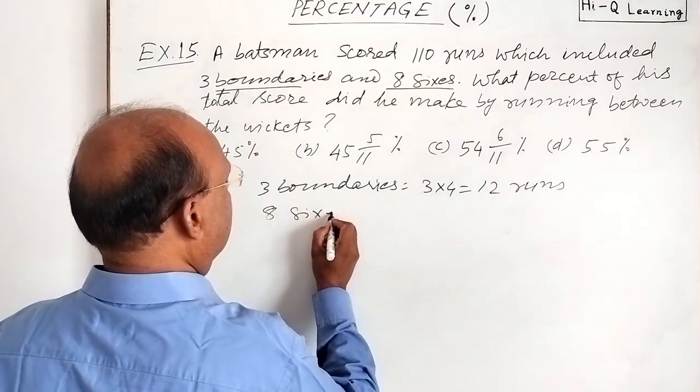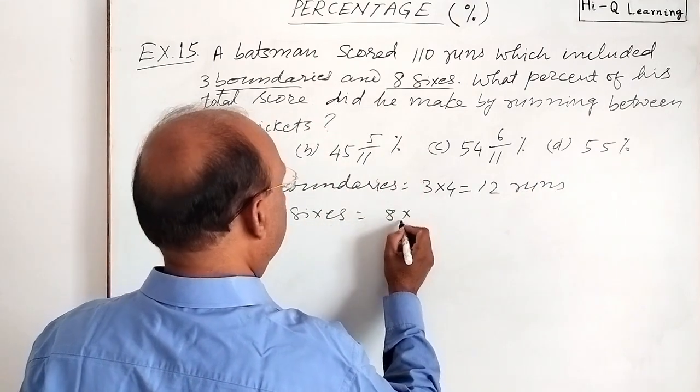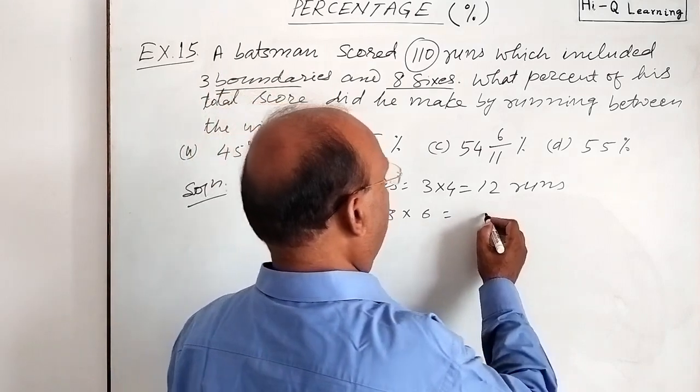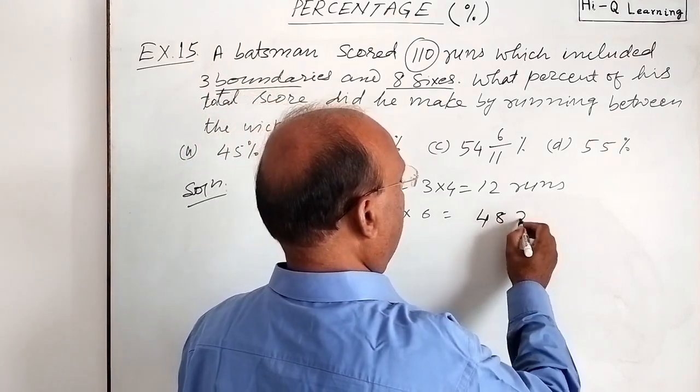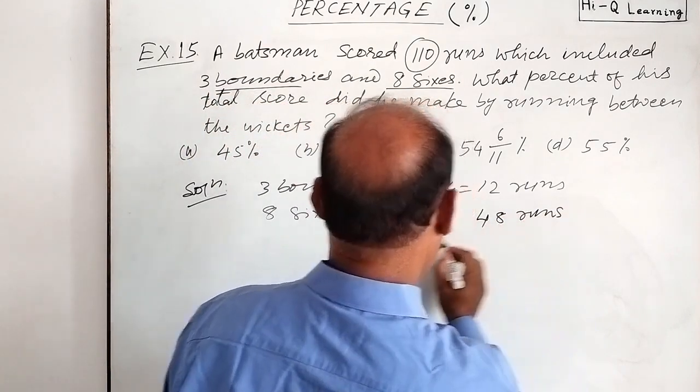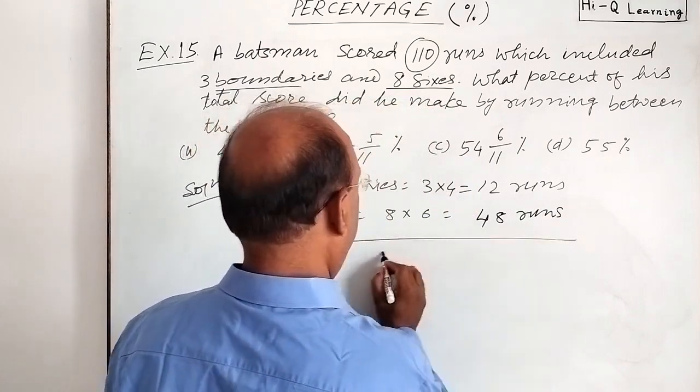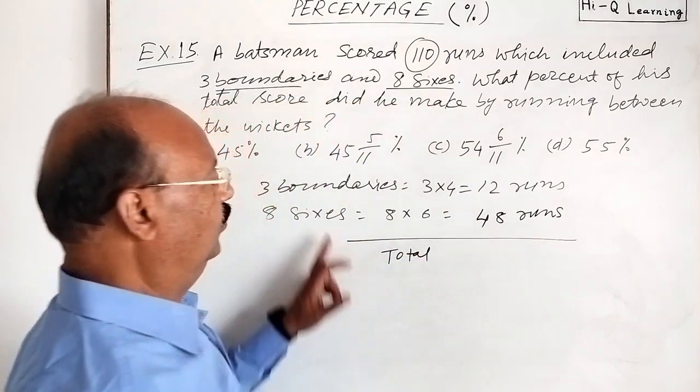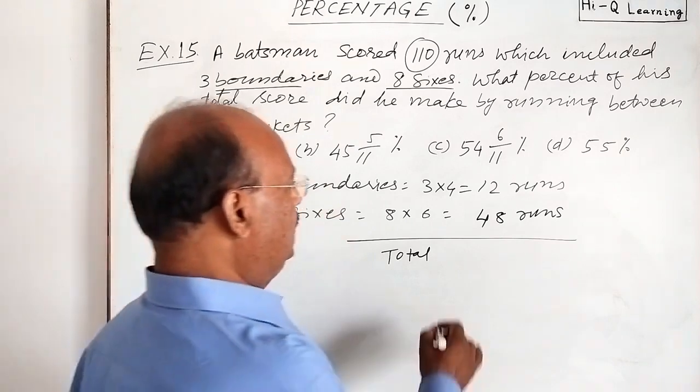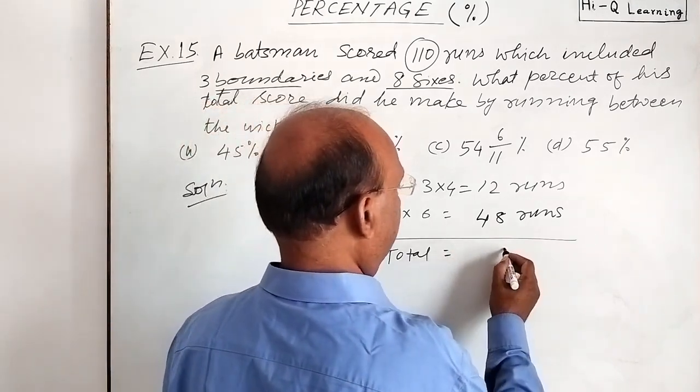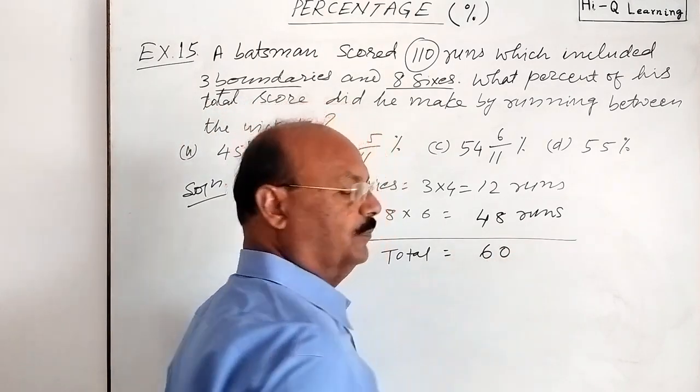And 8 sixes means 8 into 6 is equal to 48 runs. So total runs by boundaries and sixes will be how much? 60. Correct?